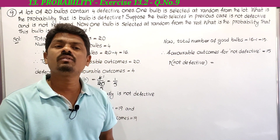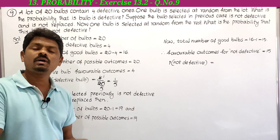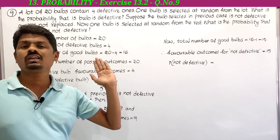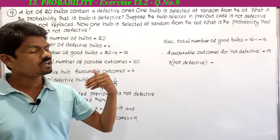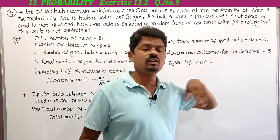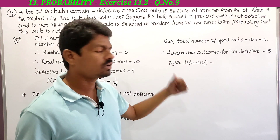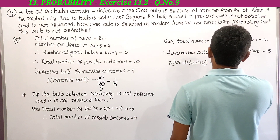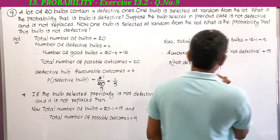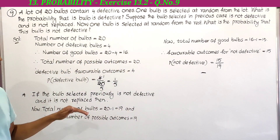If one bulb is selected at random, what is the probability that the bulb selected is not defective? Not defective and good are the same. Favorable outcomes for not defective is 15, since there are 15 good bulbs. Therefore probability of not defective equals 15 divided by 19. This is the 9th problem.